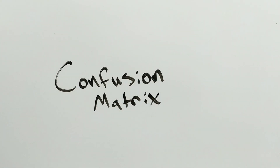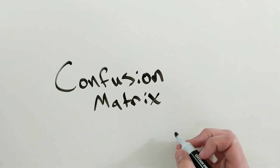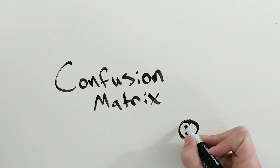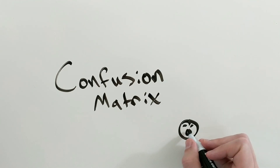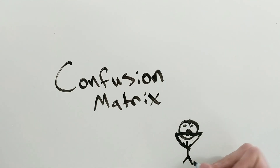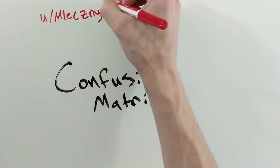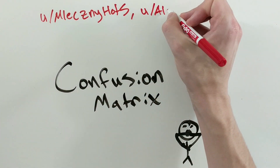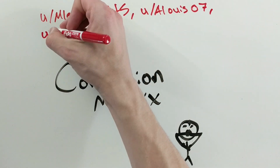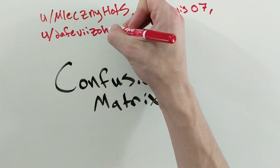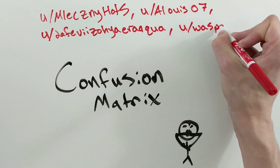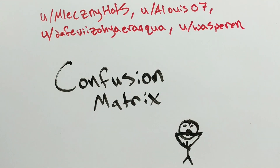A confusion matrix is a nice way of visualizing the performance of your models. In my video last week on accuracy, precision, and recall, I made a mistake while drawing my confusion matrix. Thanks to Reddit users mlexnihanes, alwio7, dafev, zagaeraqua, and waspirin for pointing it out. Let's fix my mistake.